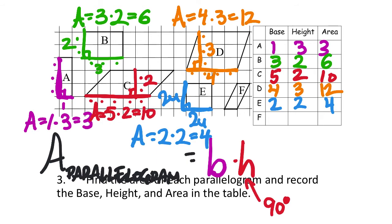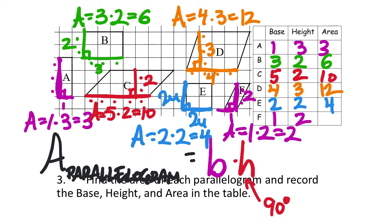And we'll do F as well. This is kind of like those obtuse triangles — I could use this line here, and that creates a 90-degree angle to the base. The base was one square and the height is two squares. So base one times height two equals two square units.